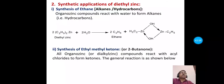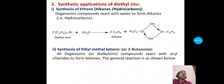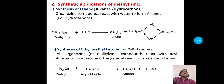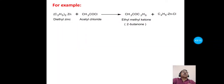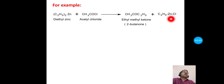The second synthetic application of diethyl zinc is synthesis of ethyl methyl ketone (2-butanone). Dialkyl zinc compounds react with acyl chlorides to form ketones. In the general reaction, dialkyl zinc reacts with acyl chloride R'COCl to give the ketone R'COR and alkyl zinc chloride as a side product. Specifically, diethyl zinc is treated with acetyl chloride to give ethyl methyl ketone (2-butanone) and ethyl zinc chloride as a side product.